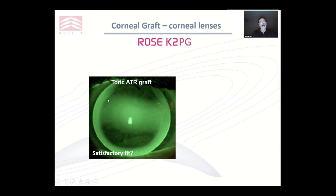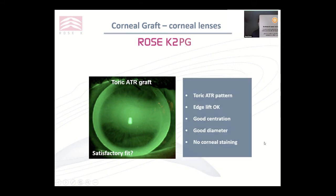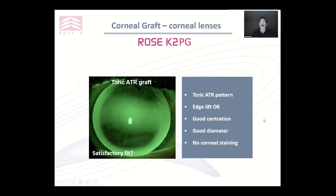Here's one where you can see the edge of the graft. We've got high spots and a lot of against-the-rule astigmatism, with a channel through here and touch here and here. You might ask: is that a satisfactory fit? In fact, this patient was wearing this lens quite happily. The toricity was only over the graft — it didn't extend into the peripheral cornea. Therefore the lens sat very well on the peripheral cornea, and it didn't matter that it didn't fit perfectly over the central area. We've got a toric against-the-rule pattern, edge lift is fine, good centration, good diameter, no corneal staining. I wouldn't change that fit.